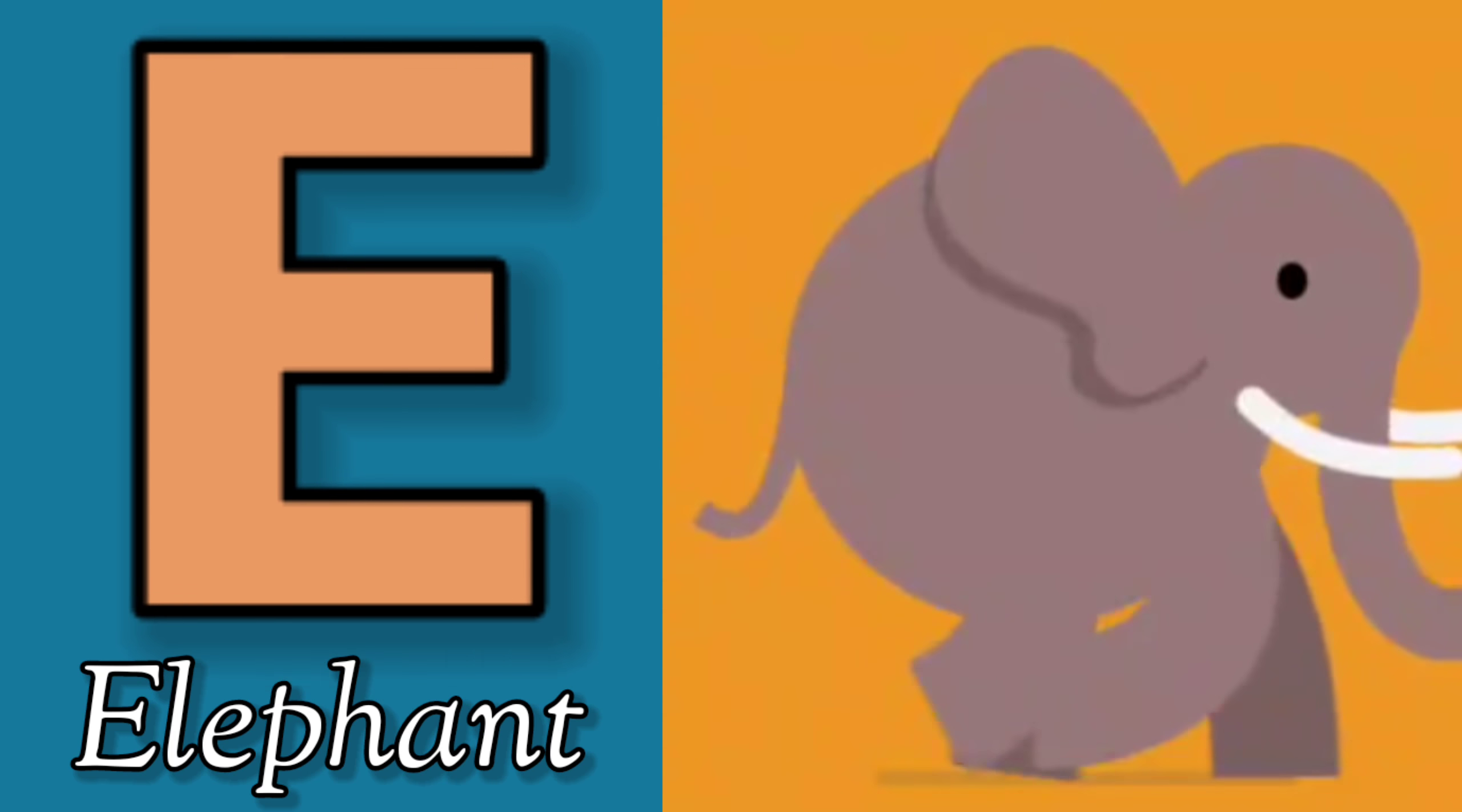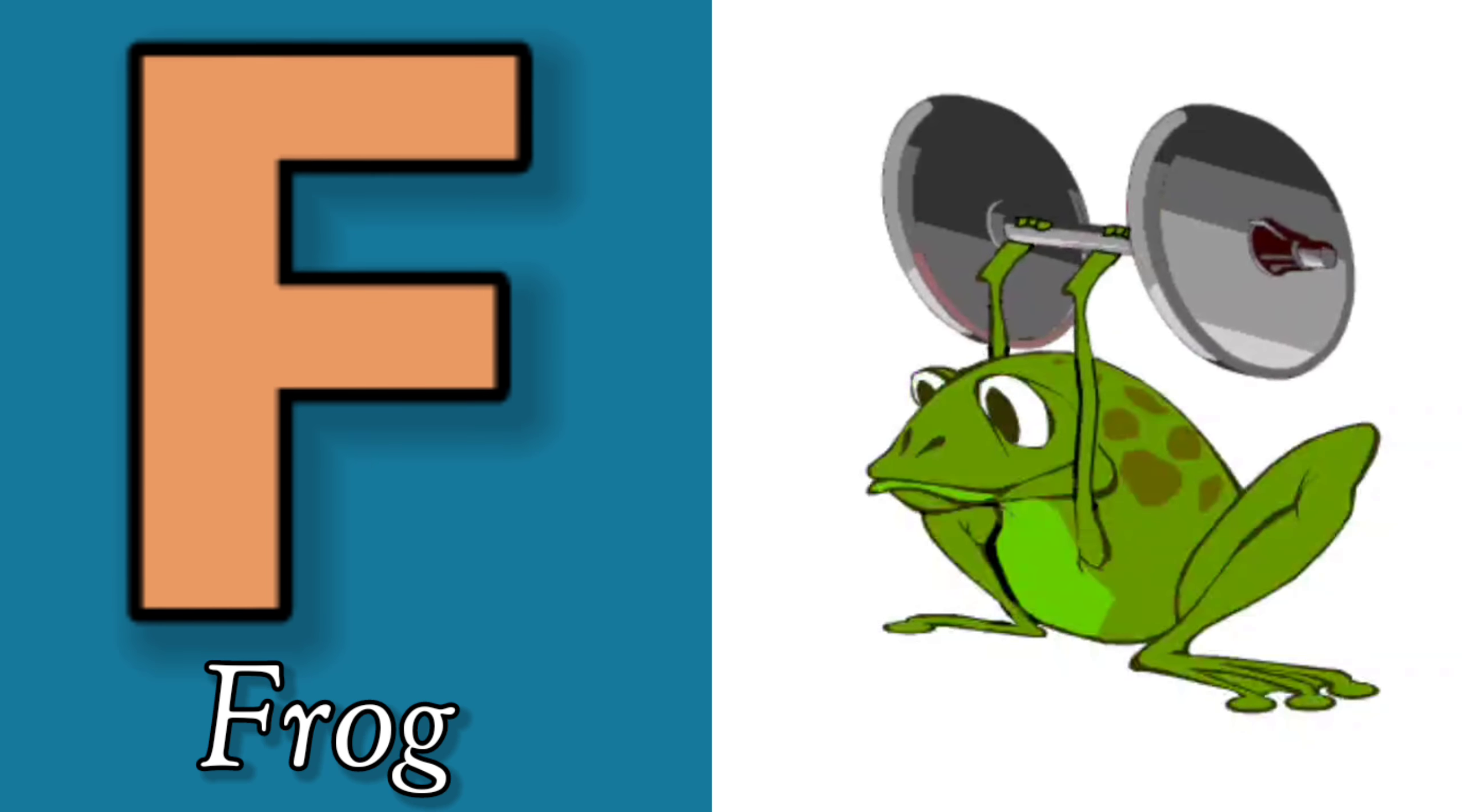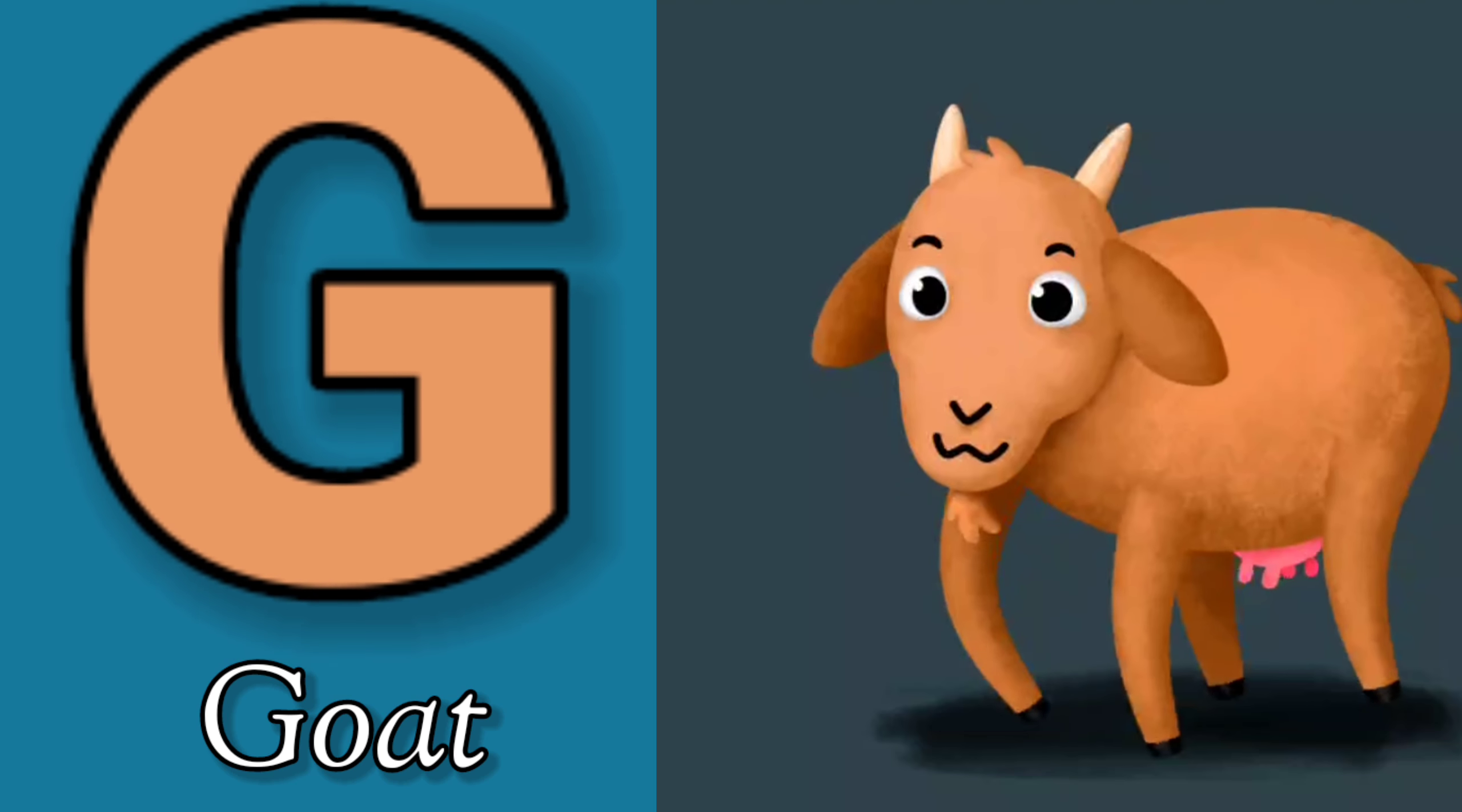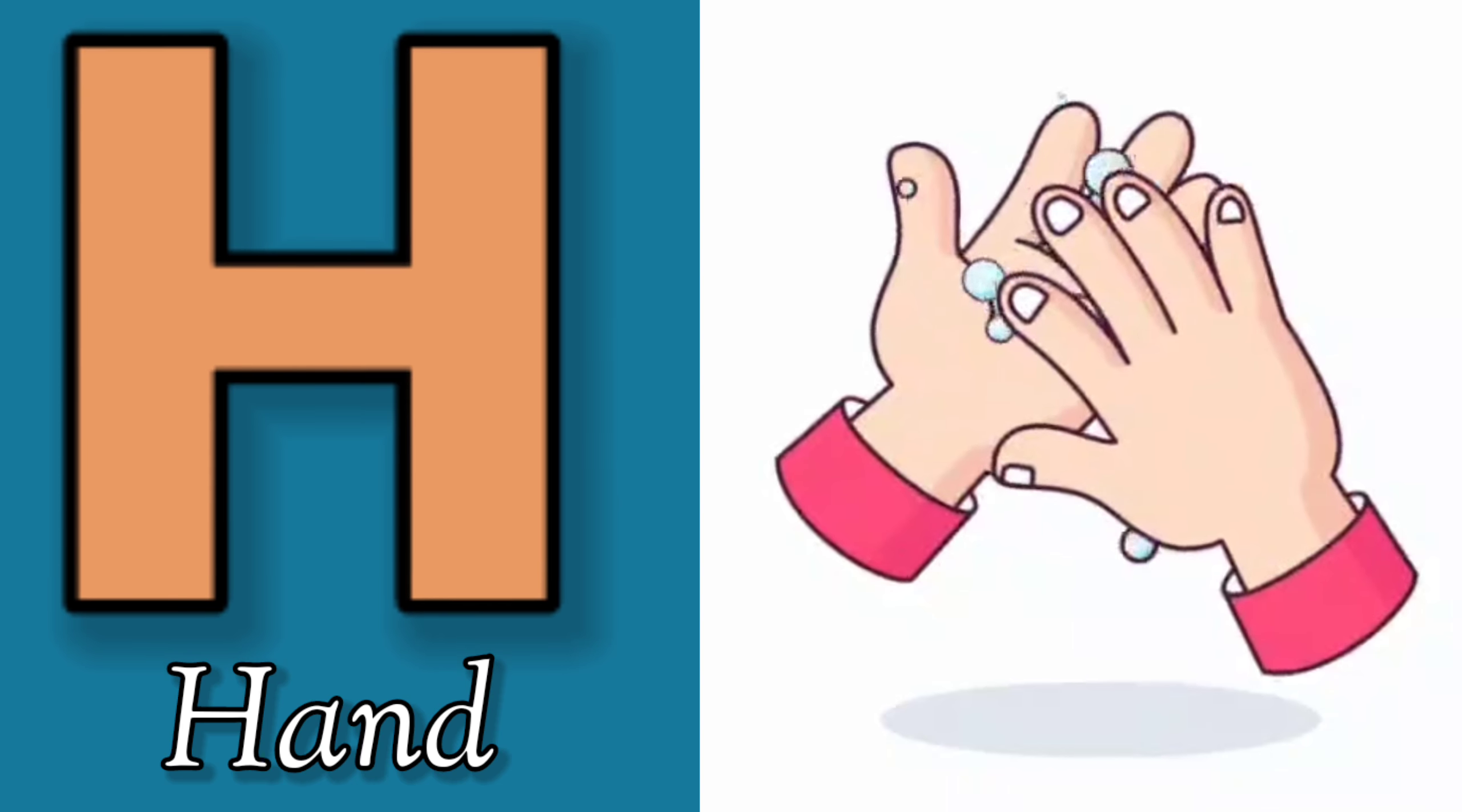E is for Elephant, E-E-Elephant. F is for Frog, F-F-Frog. G is for Goat, G-G-Goat. H is for Hand, H-H-Hand.